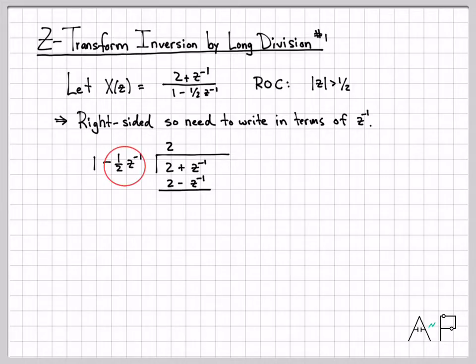And then two times a negative ½z^-1, two times a half cancels, gives me one. I'm left with just a minus z^-1. And if I subtract these, the twos go away. Z to the negative one minus a negative z^-1 is 2z^-1.